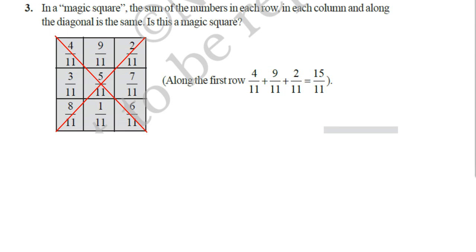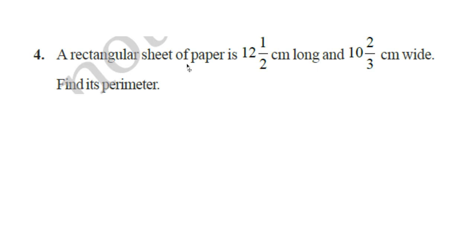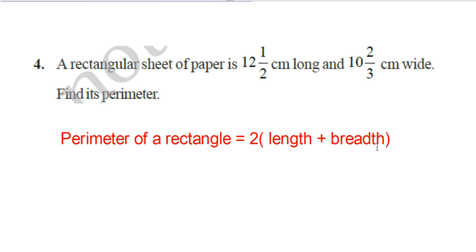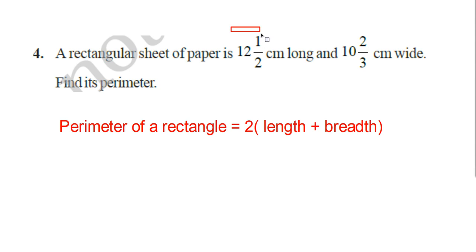Next question is, a rectangular sheet of paper 12, 1 by 2 cm long and 10, 2 by 3 cm wide. Find its perimeter. Perimeter of a rectangle, you know, it is 2 into length plus breadth. Length is given as 12, 1 by 2 cm and breadth is given as 10, 2 by 3 cm. Now 2 into 12, 1 by 2 plus 10, 2 by 3. 12, 1 by 2 plus 10, 2 by 3 you do it first. Then you multiply by 2 you will get the answer.